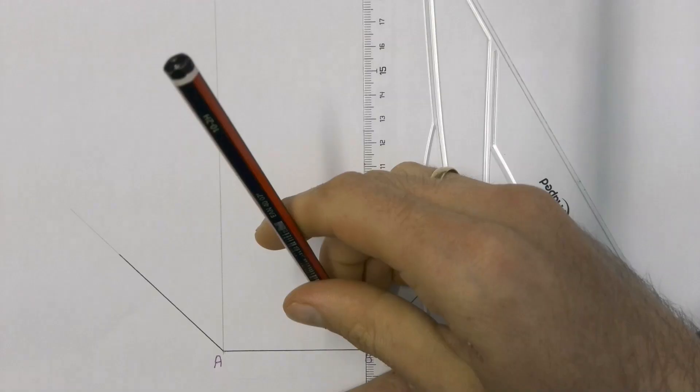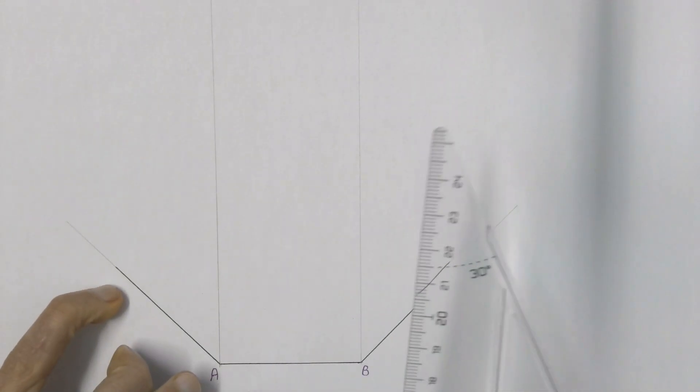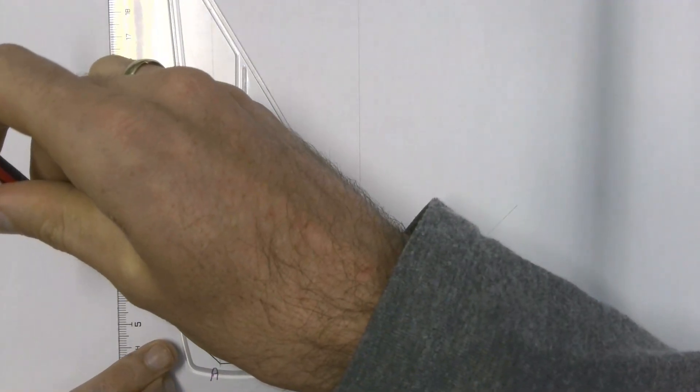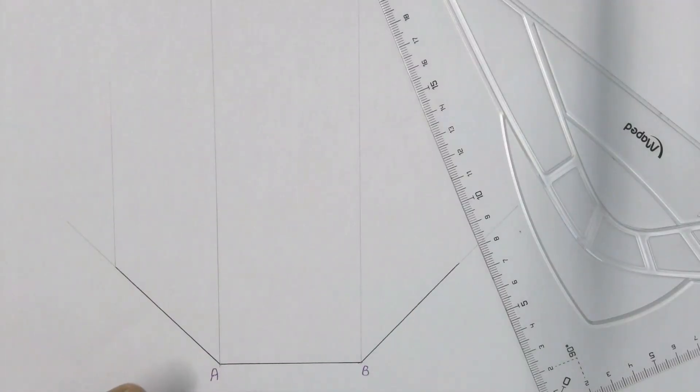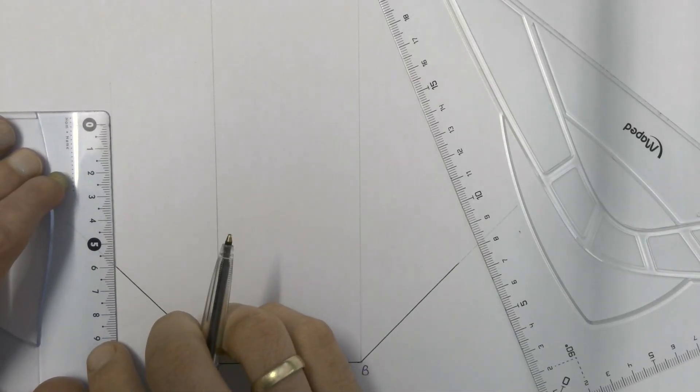We are going to project straight up from point A and from point B. Then from the end of our first 45-degree line, we are going to draw a line straight up. And then we can measure and draw a 60mm line using that construction line.